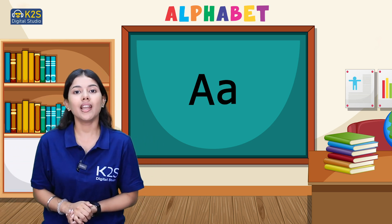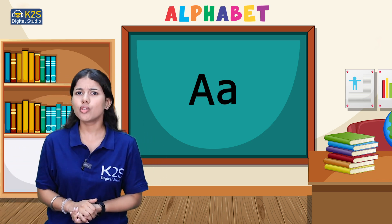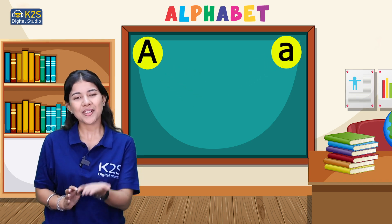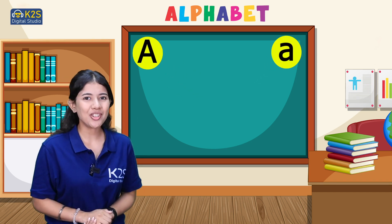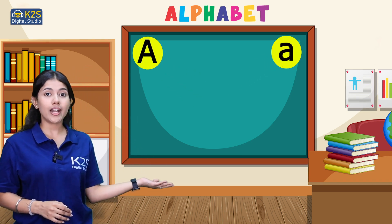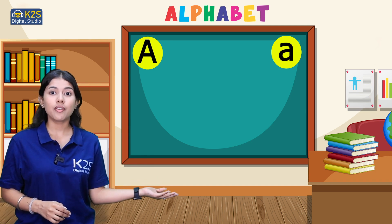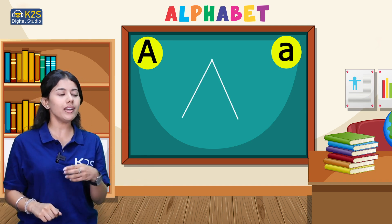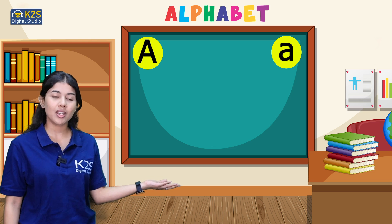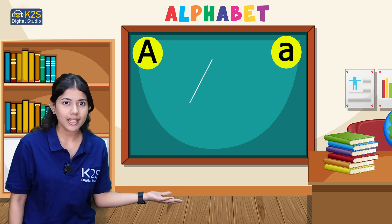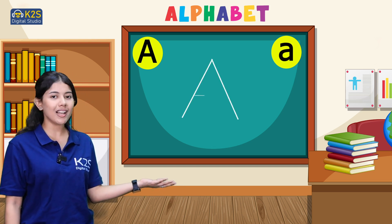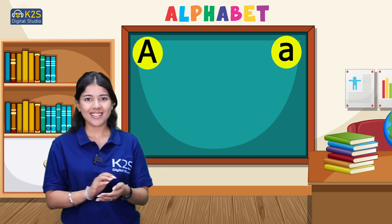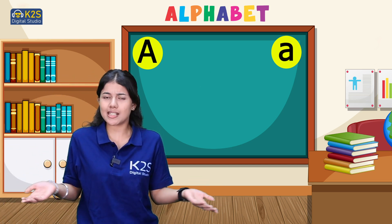Letter A. So do you know how do we write letter A? Come on, I will show you. So for letter A, we use two slanting lines and one sleeping line. Two slanting lines and one sleeping line. That's great, you are fast!